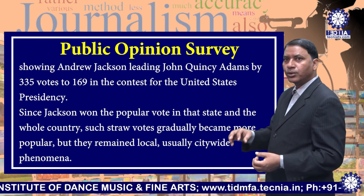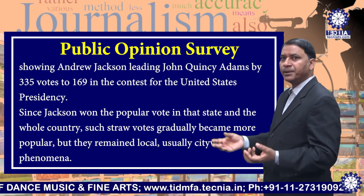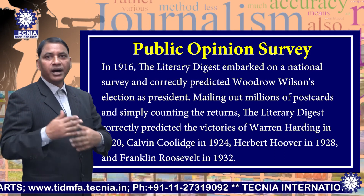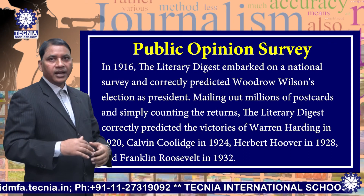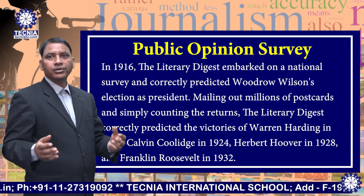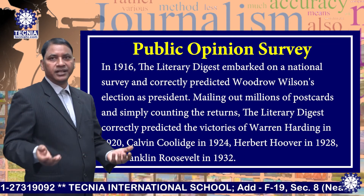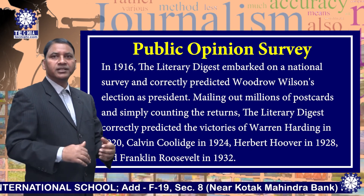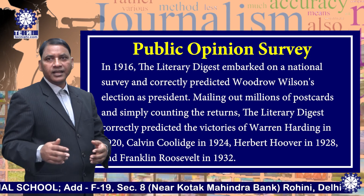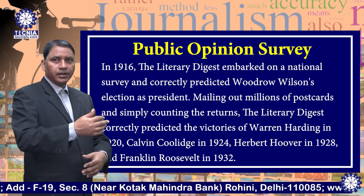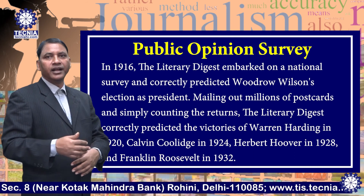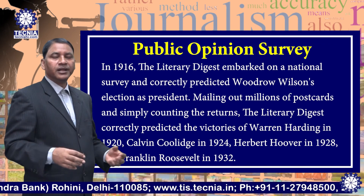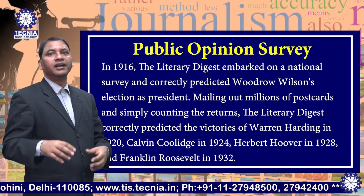But there remained local, usually city-wide phenomena. In 1916, the Literary Digest embarked on a national survey and correctly predicted Woodrow Wilson's election as president, mailing out millions of postcards and simply counting their returns. The Literary Digest correctly predicted the victories of Warren Harding in 1920, Calvin Coolidge in 1924, Herbert Hoover in 1928, and Franklin Roosevelt in 1932.